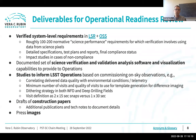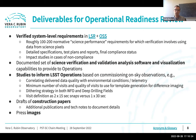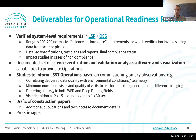We have a list of deliverables to have ready for the operations readiness review — the transition between construction and the start of the 10-year LSST survey. The first, formally, is a verified set of system-level requirements from our top-level documents: the LSST System Requirements and the Observatory System Specifications, the LSR and OSS. There are something like 100 to 200 normative science performance requirements. For each one, we need detailed specifications, test plans and reports, and final compliance status, as well as understanding the impacts in cases of non-compliance.